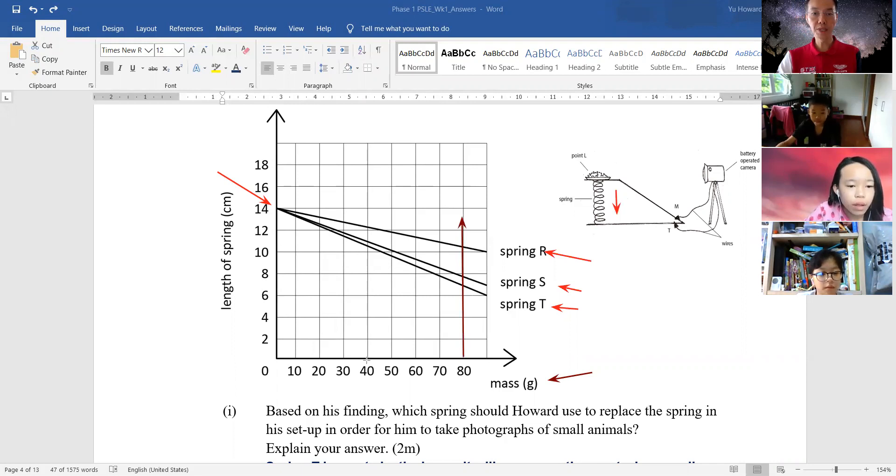Any of this, because these three lines, they didn't cross each other. They only started at the same point. So which spring compress the most?